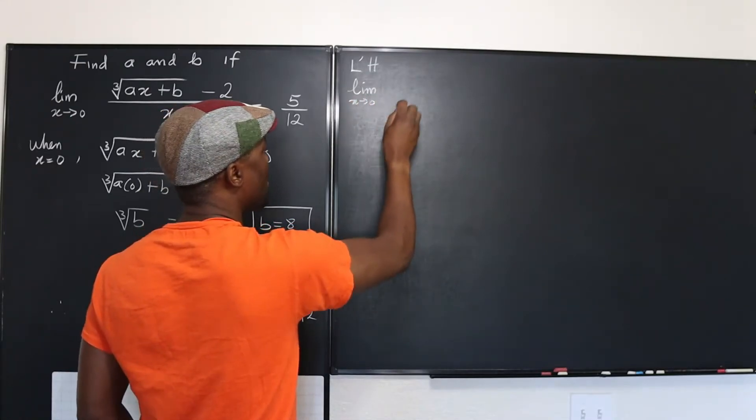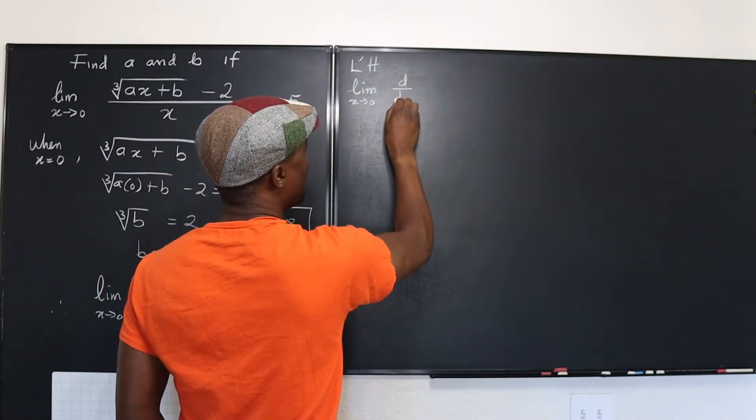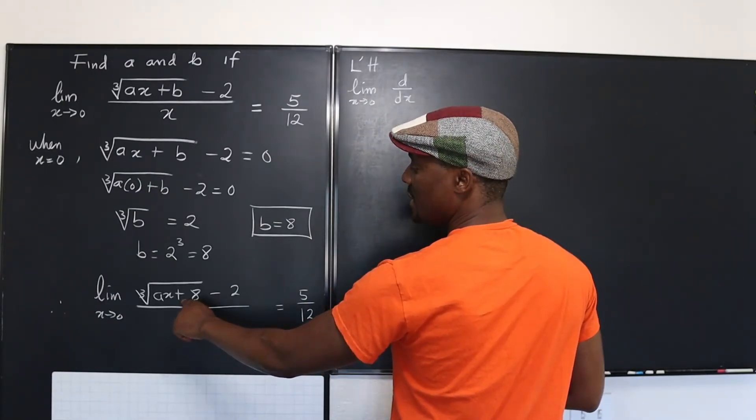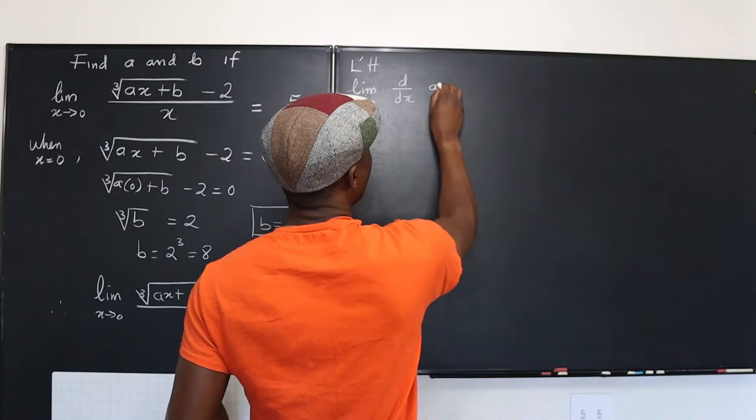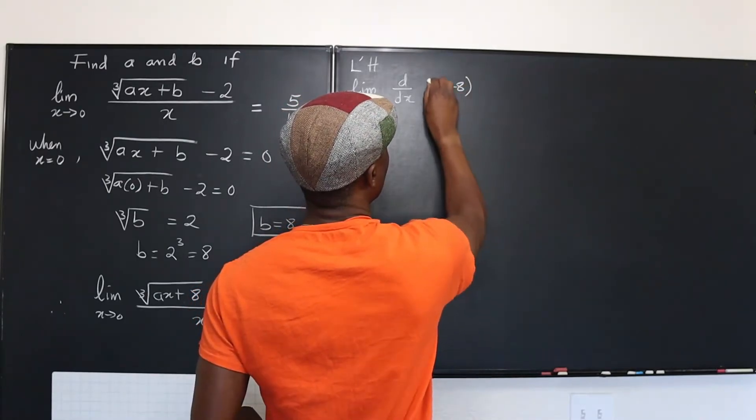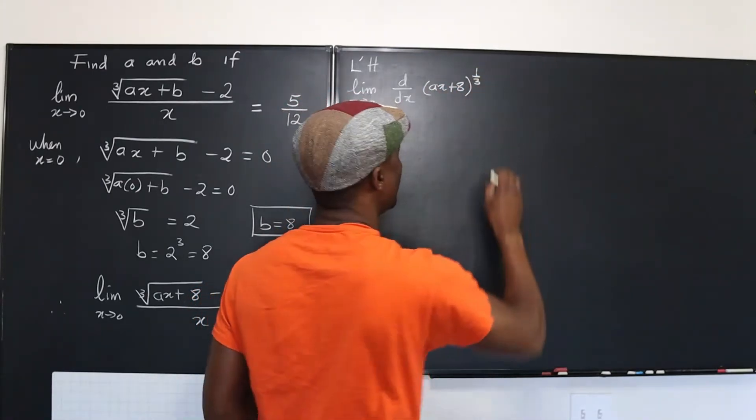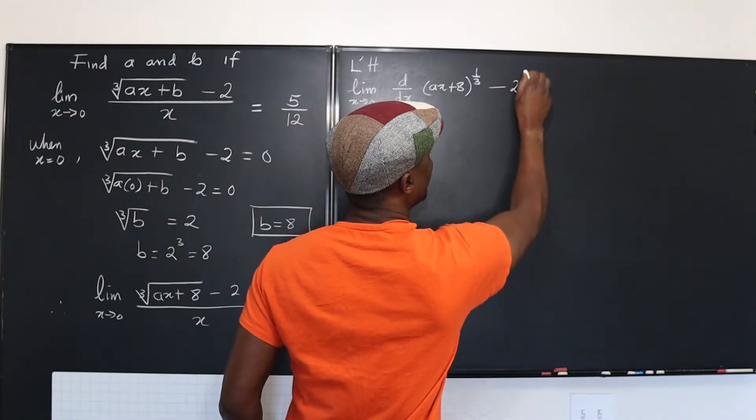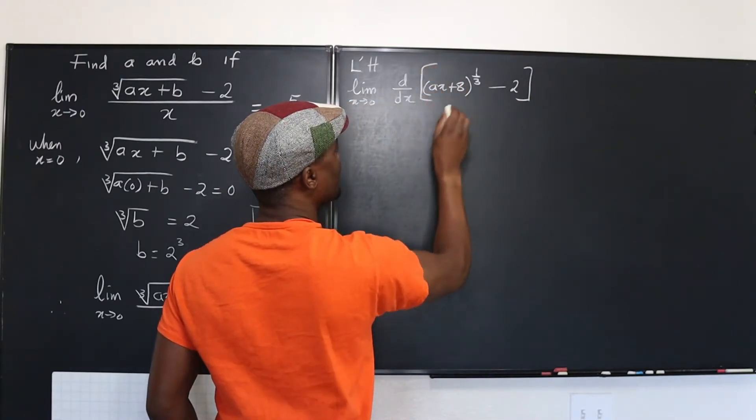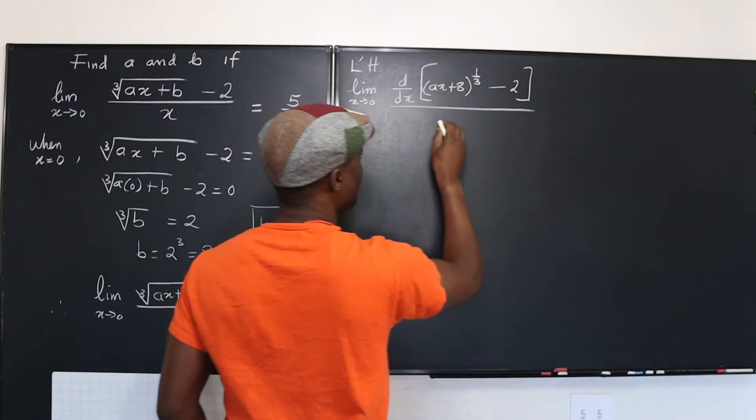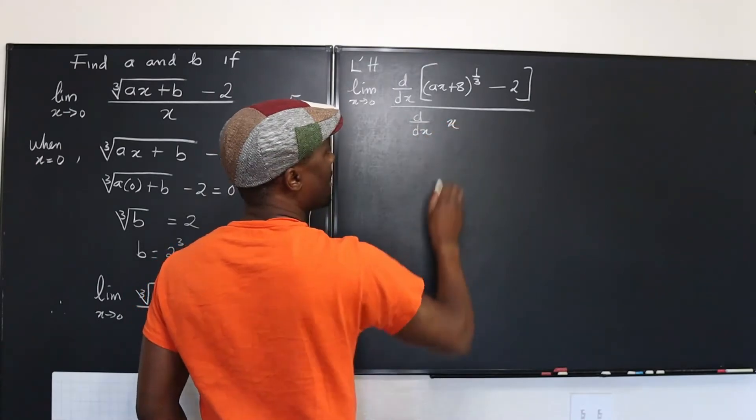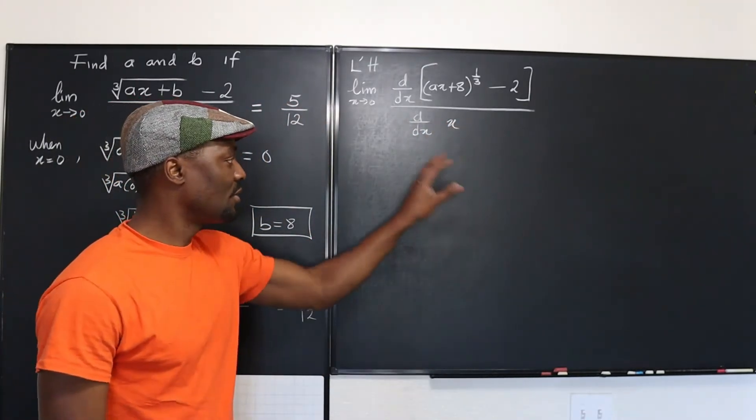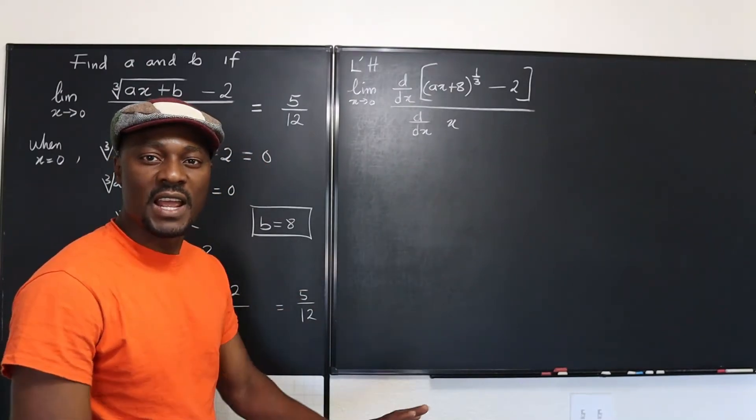I will rewrite this expression as an exponent. So it's going to be A x plus eight raised to one third. Okay, that's a cleaner way to write this expression, minus two. If I take the limit of this expression on top, divided by d dx of x, I'm going to get five over twelve. But I'm just going to leave this five over twelve aside and let it be.